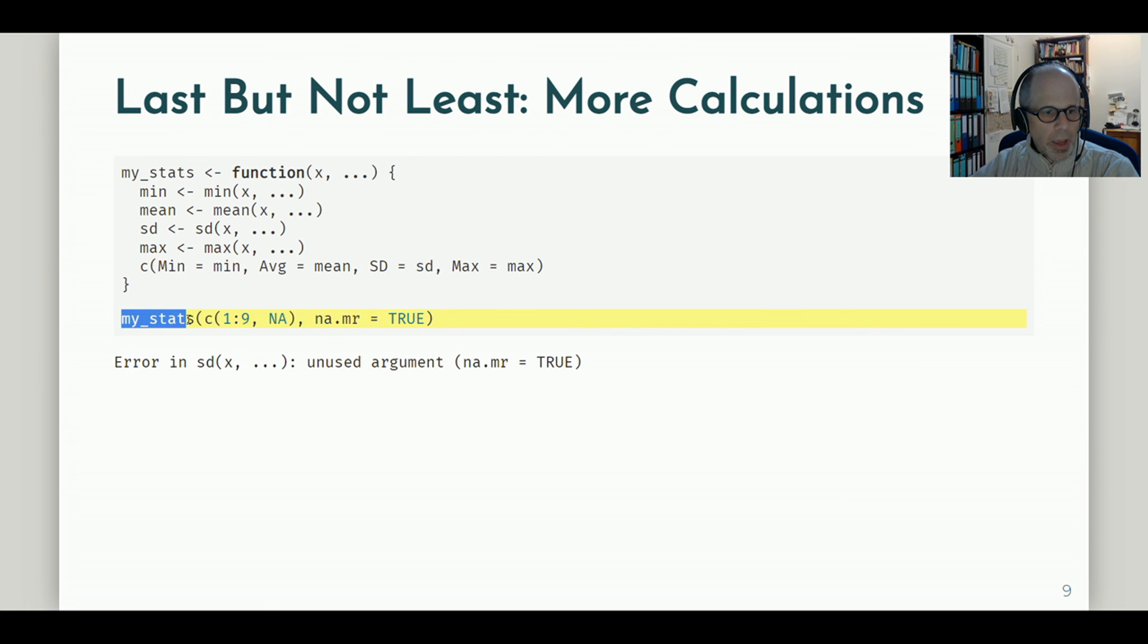Let's say we are the end users. Maybe we didn't write the my_stats functions, we just want to apply it. What do you think of this error message? It says error in sd. So as an end user, I didn't use the sd function. I used the my_stats function. And sd is only used internally. So we could say the error message is not very convenient for the end user. The my_stats function should handle the error and not the sd function.